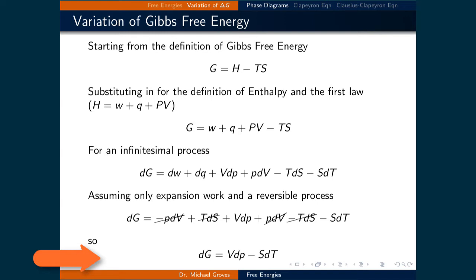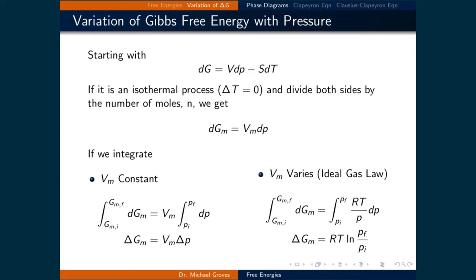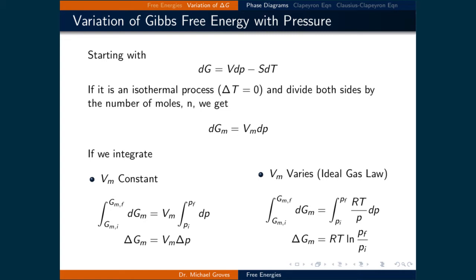Based on this, we can now quantify how the Gibbs free energy changes as a function of temperature and pressure. Looking first at how the Gibbs free energy of a given phase changes with pressure, we assume isothermal conditions, which cancels the second term. Dividing through by the number of moles, the infinitesimal change in molar Gibbs free energy equals the molar volume times dP. For solids or liquids, where molar volume is essentially constant during the pressure change, the change in molar Gibbs free energy equals the molar volume times the change in pressure.